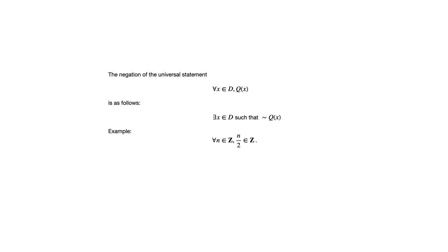Let's look at an example. This says: for all n in the set of integers, n over 2 is in the set of integers — which, by the way, is false. The negation of that would say: there exists an n in the integers such that n over 2 is not in the set of integers.